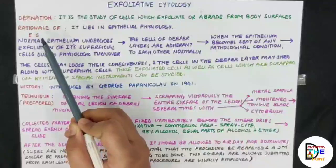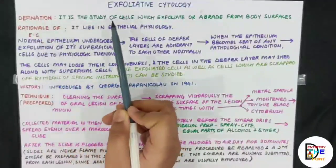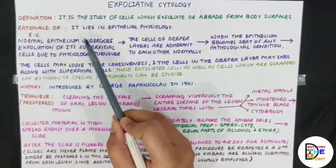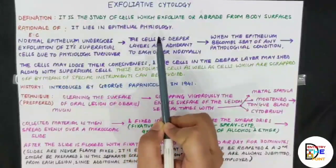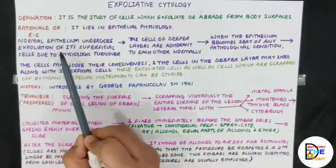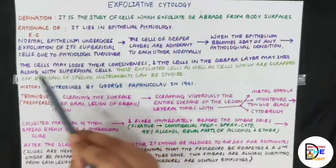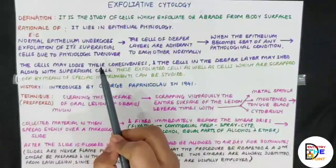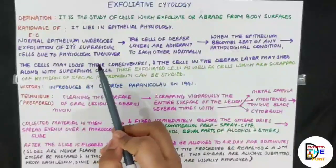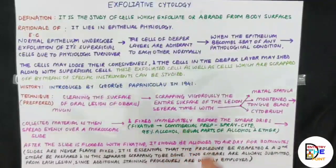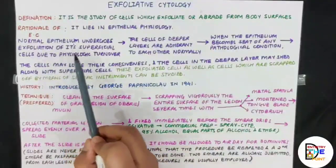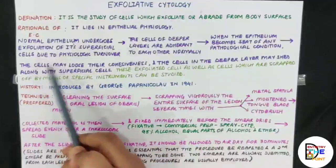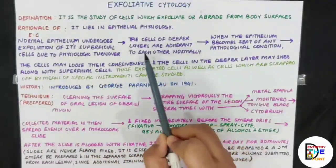The rationale — meaning the set of reasons or logical basis — of exfoliative cytology lies in epithelial physiology. Normal epithelium undergoes exfoliation of its superficial cells due to physiologic turnover, which is a continuous process where cells fulfill their function, shed off, and new cells take their place.